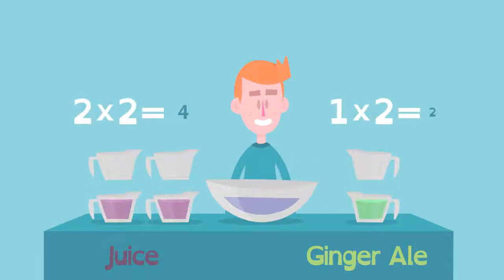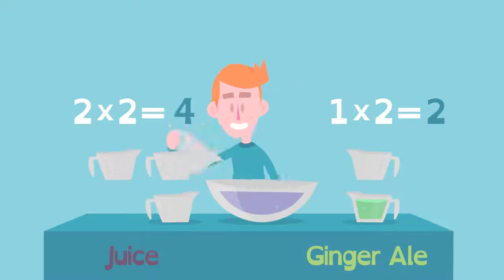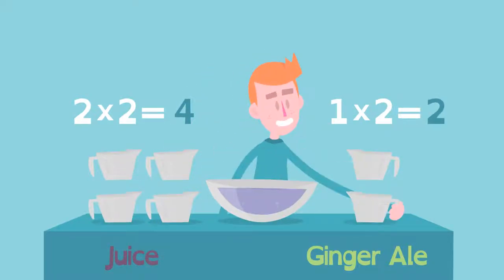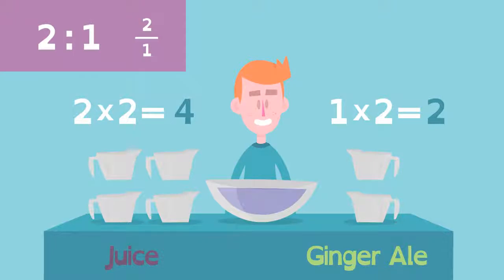If he doubles his recipe, meaning he multiplies it by two to start with four cups of juice, he'll need two cups of ginger ale to keep the ratio of juice to ginger ale two to one.